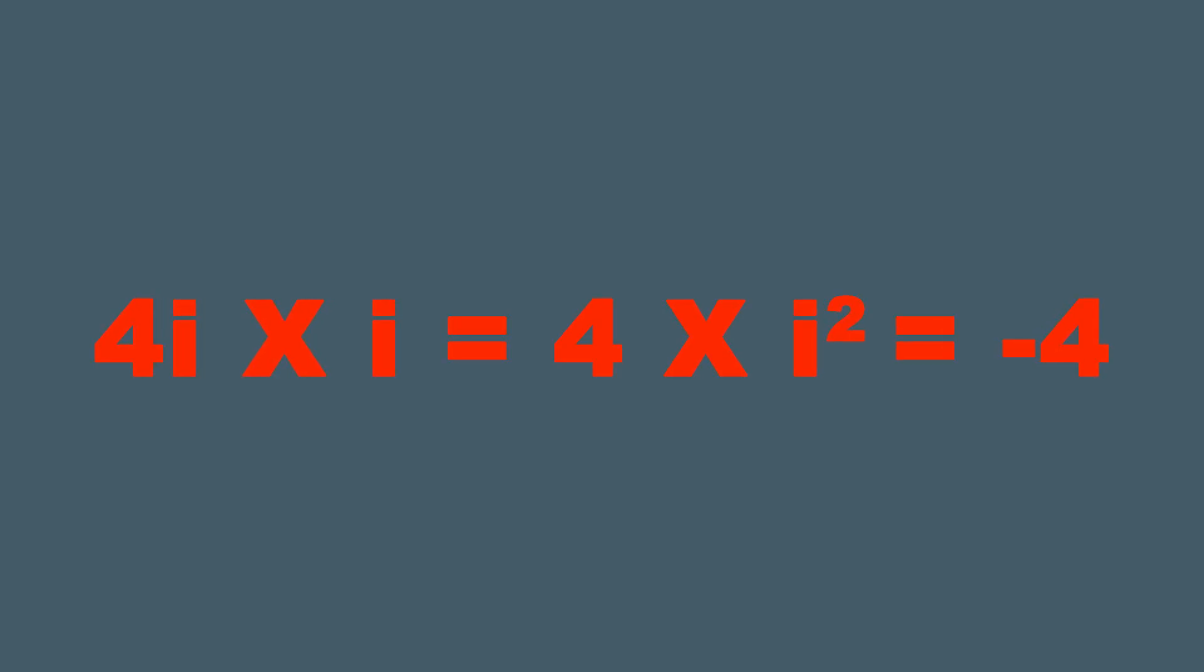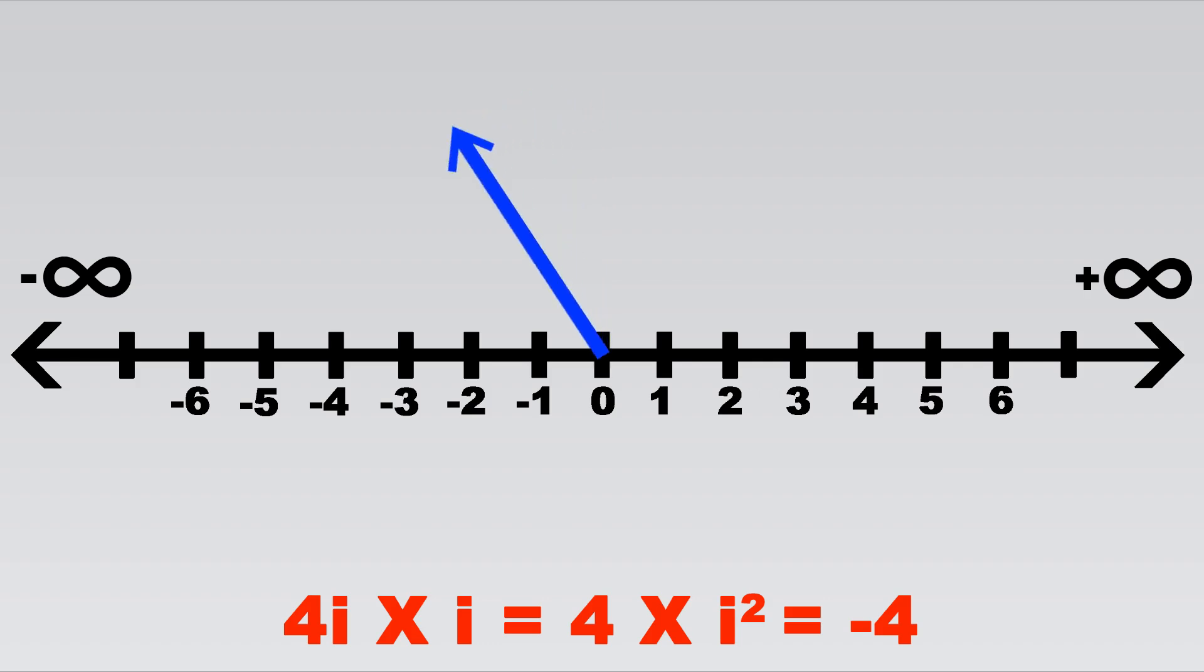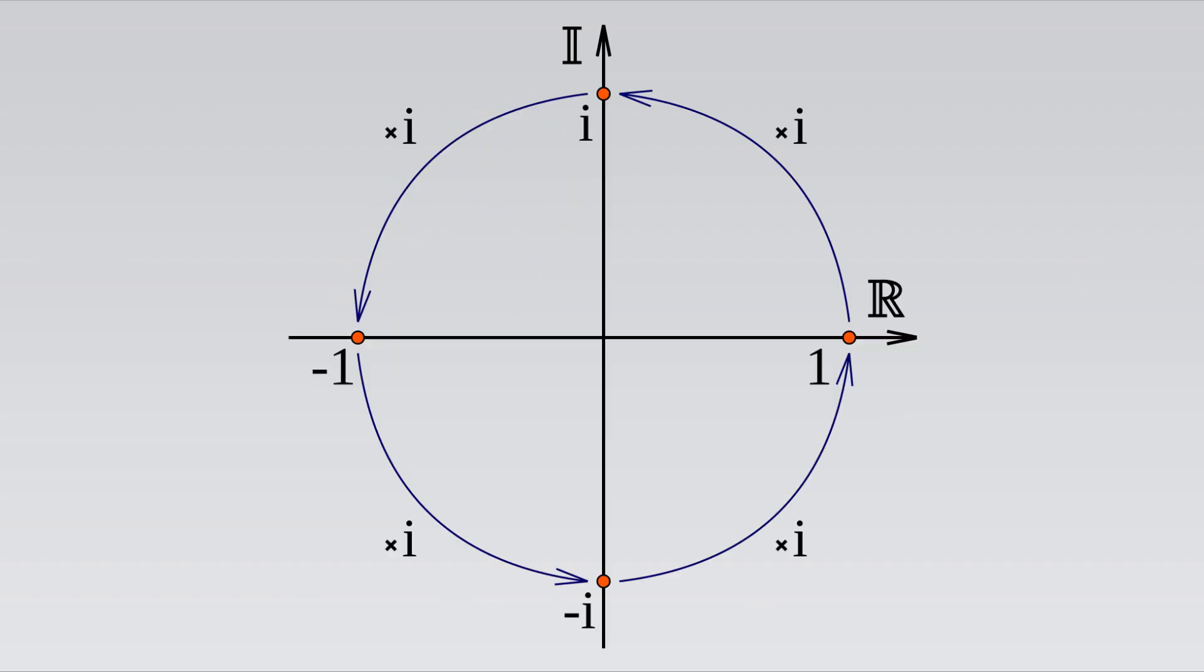Multiplying twice by i means you're multiplying by minus 1. Since i squared equals negative 1, it goes another 90 degrees or 180 degrees in total to the negative section, and so on.